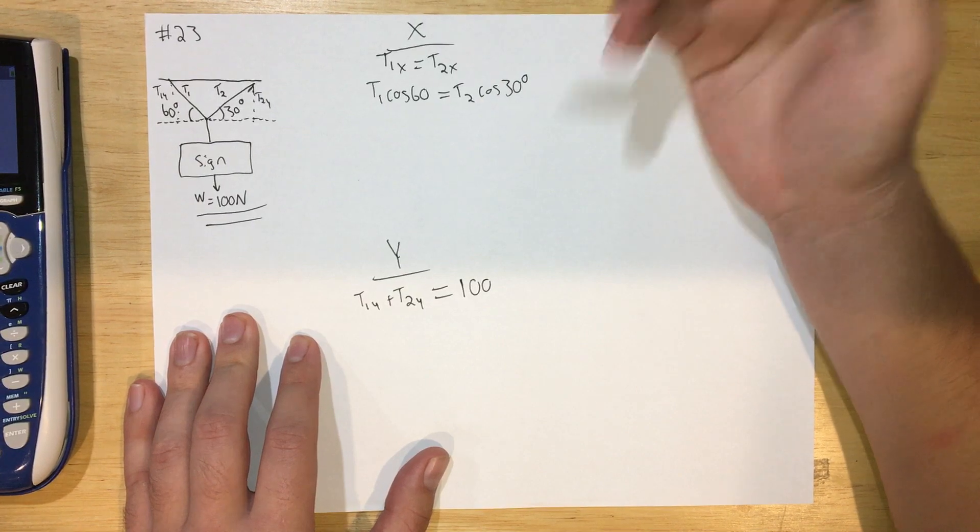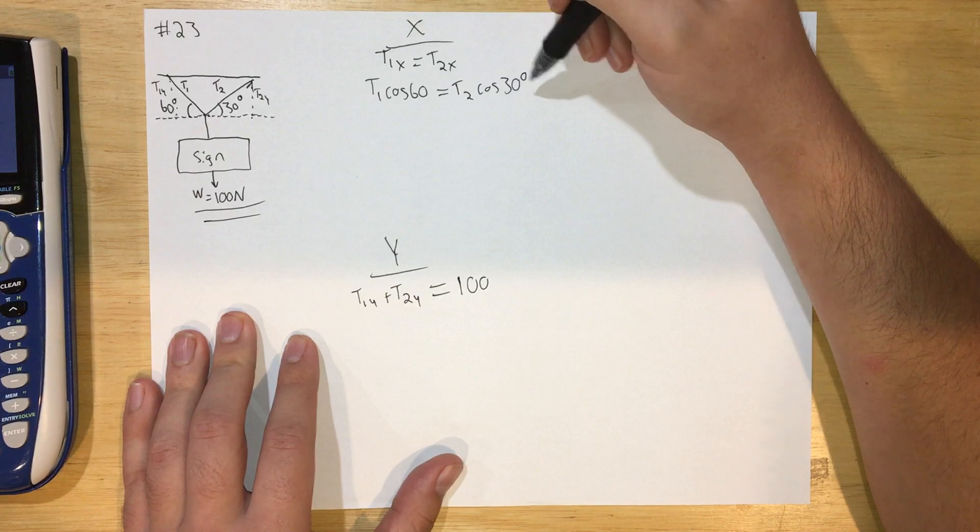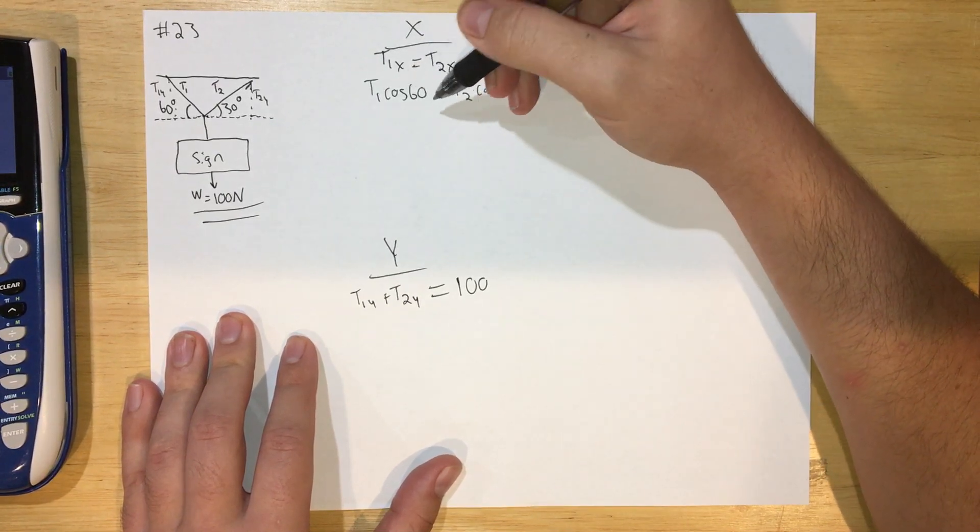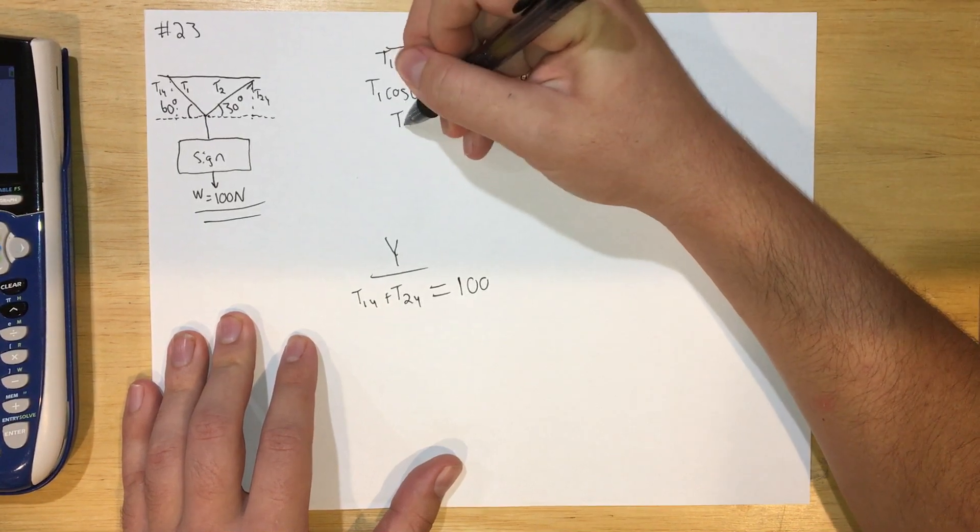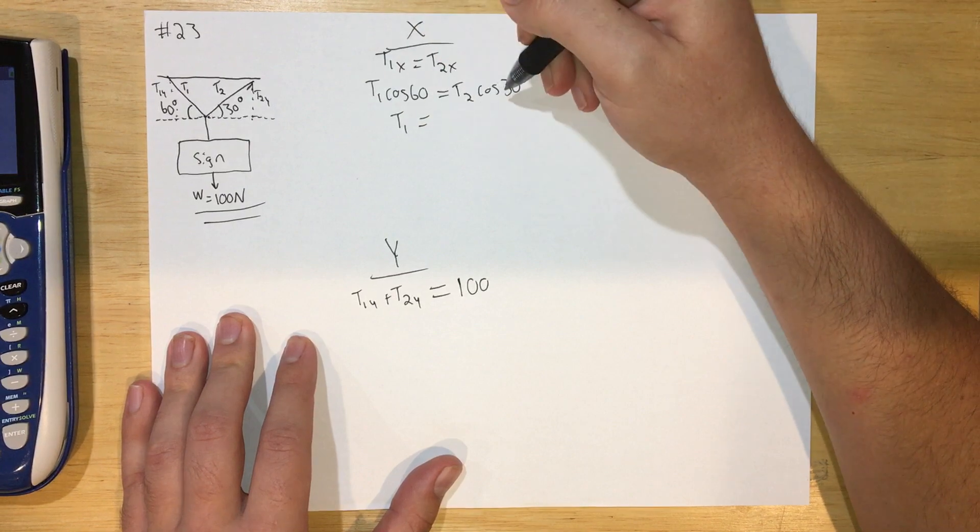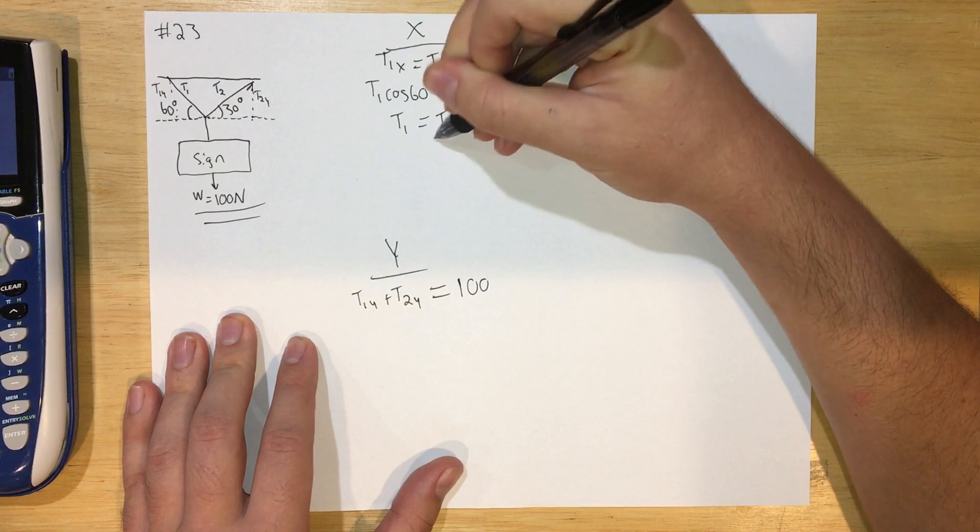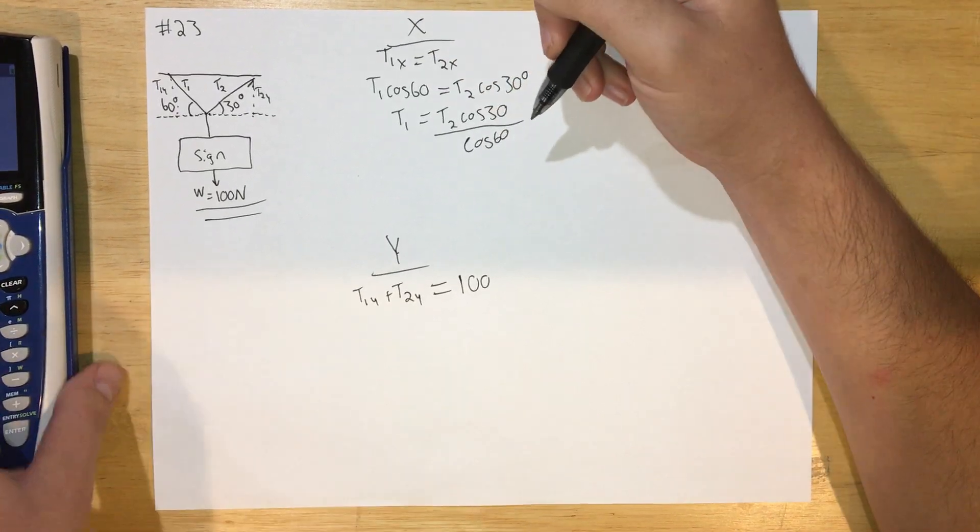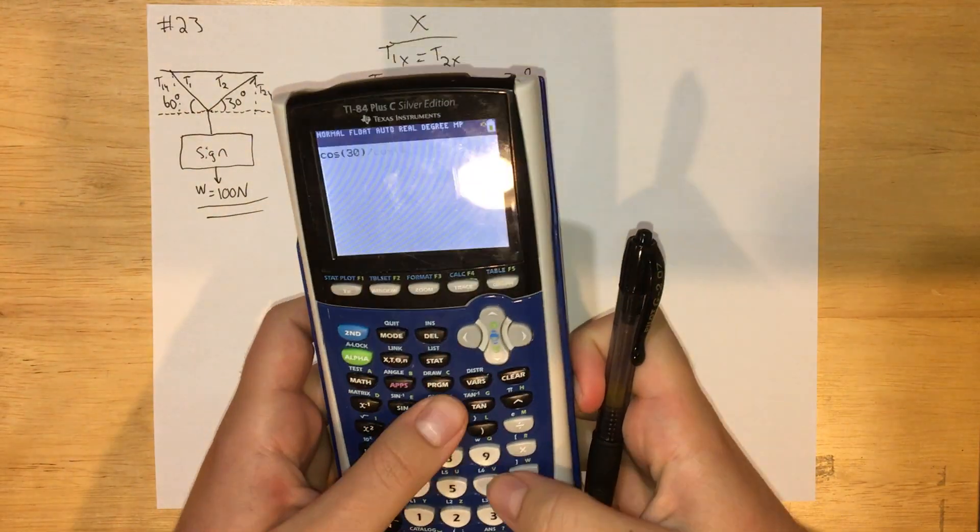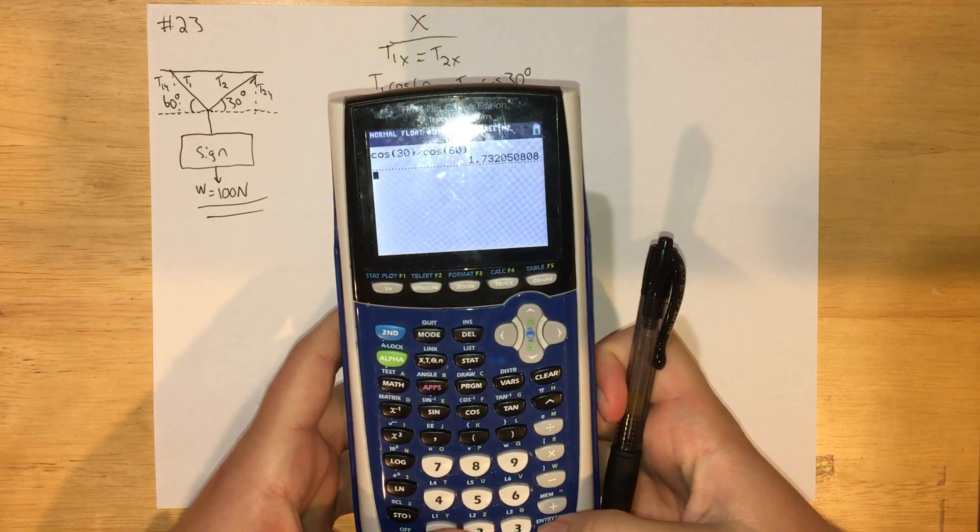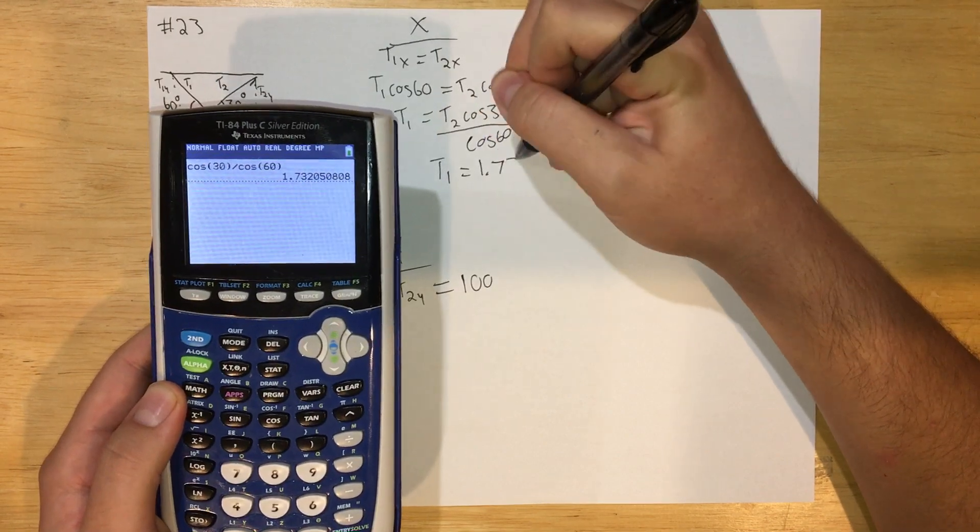So now we have two equations and two unknowns, so we can use substitution to solve for our tensions. I'm going to start up here for the X equation. I'm going to solve for either one of the tensions. It doesn't matter, I'm just going to solve for T1 for now. So T1, I'm dividing cosine 60 by both sides: T1 equals T2 cosine 30 divided by cosine 60. I can plug this in my calculator. Cosine 30 divided by cosine 60 equals 1.73, so T1 equals 1.73 T2.